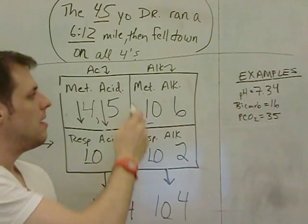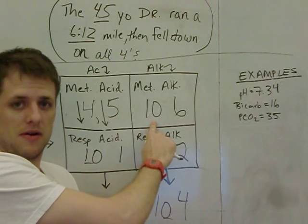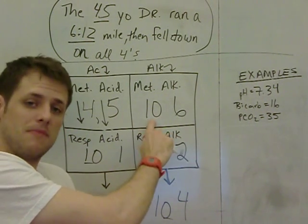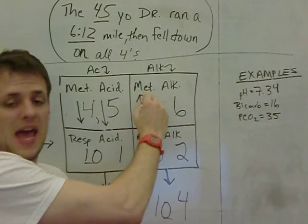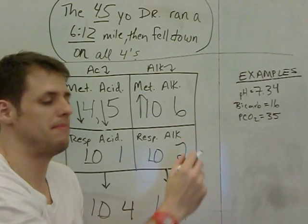Metabolic alkalosis: remember we're going to start with the change in the bicarb here. Bicarb is going up in metabolic alkalosis, and for every ten that bicarb goes up, pCO2 for an adequate adjustment should go up by six.